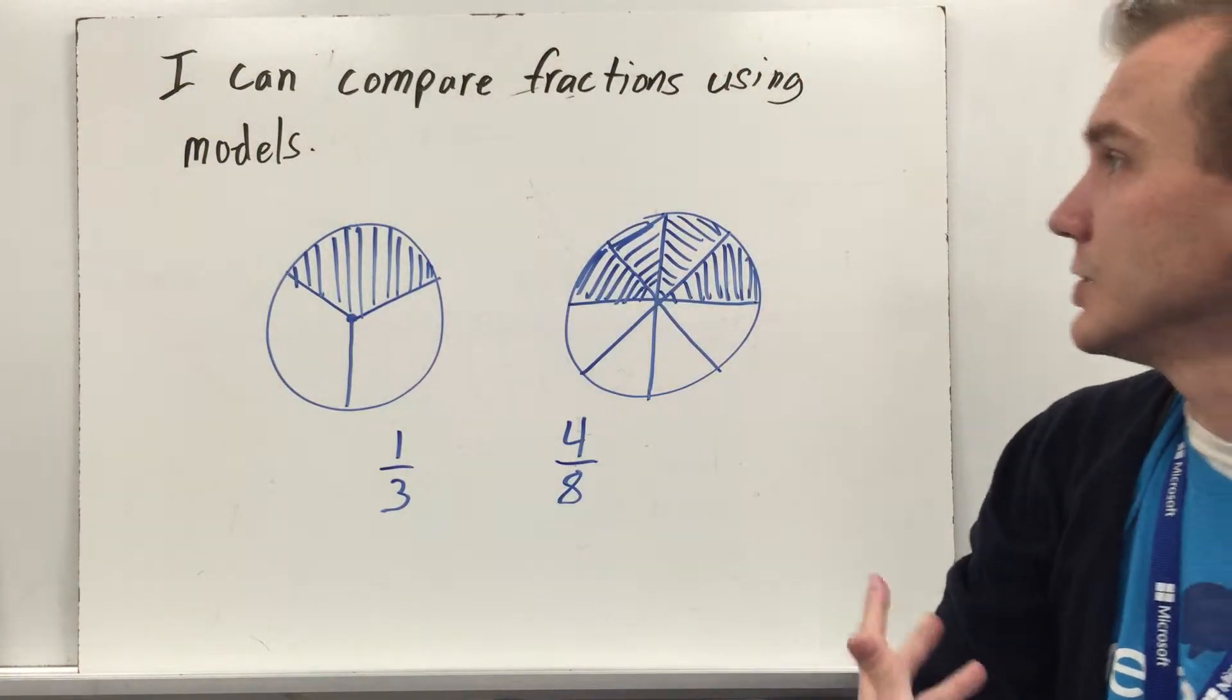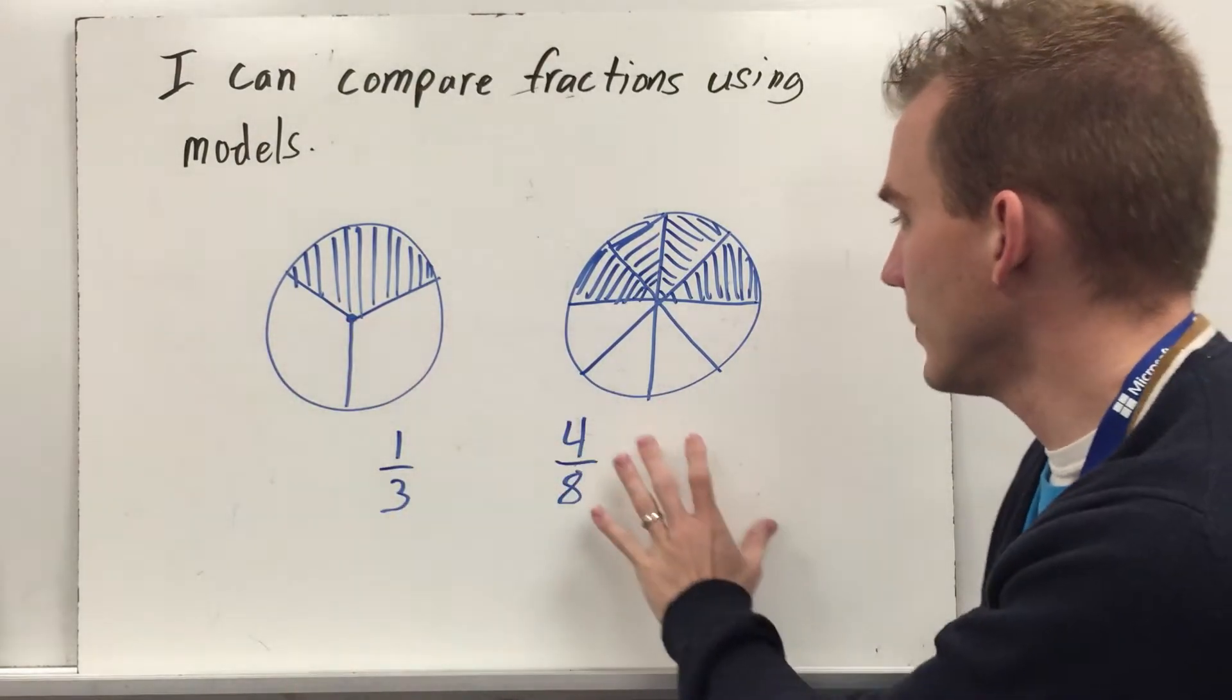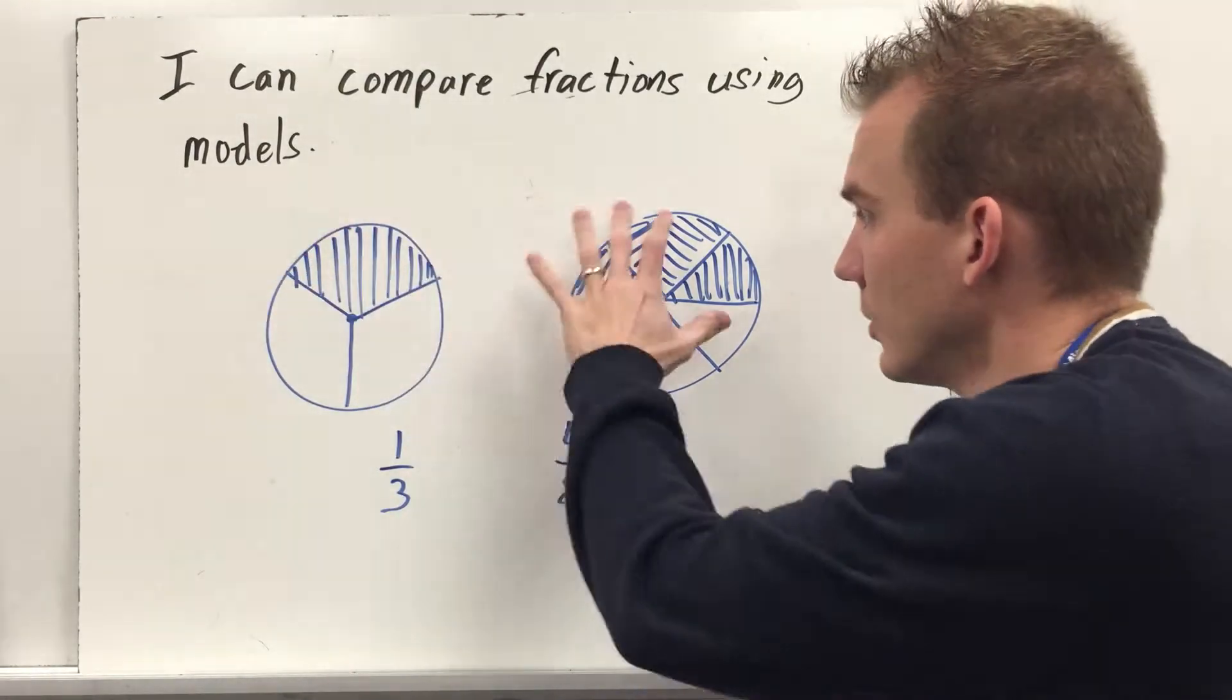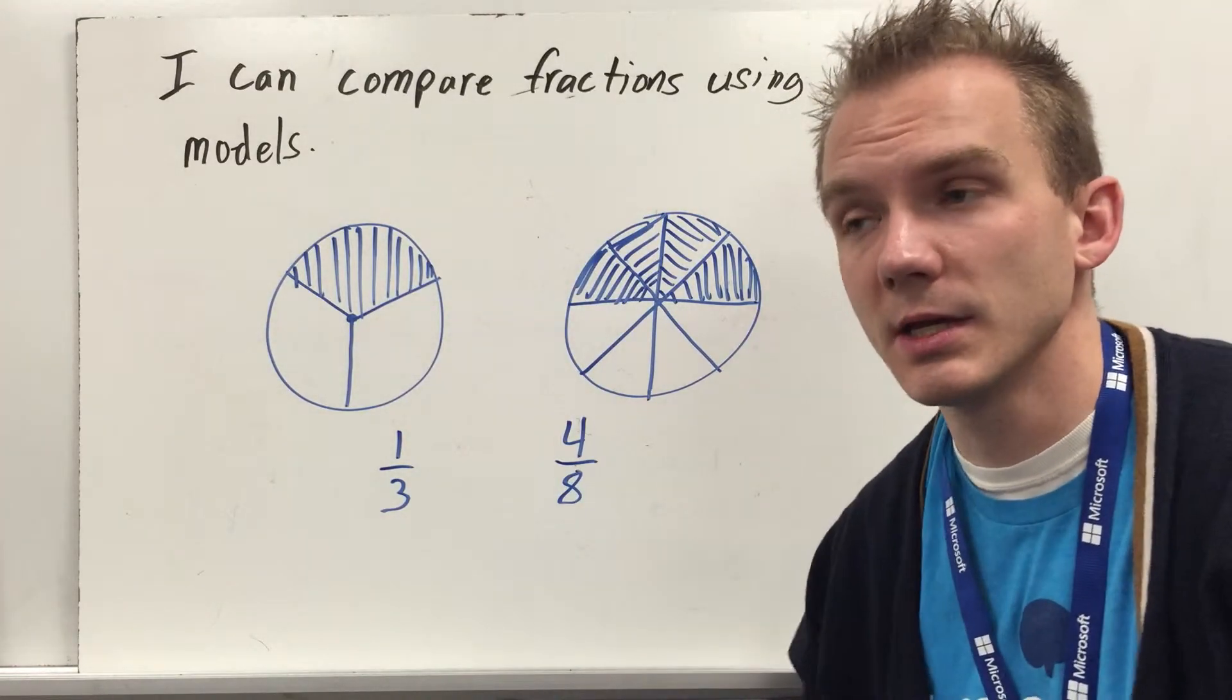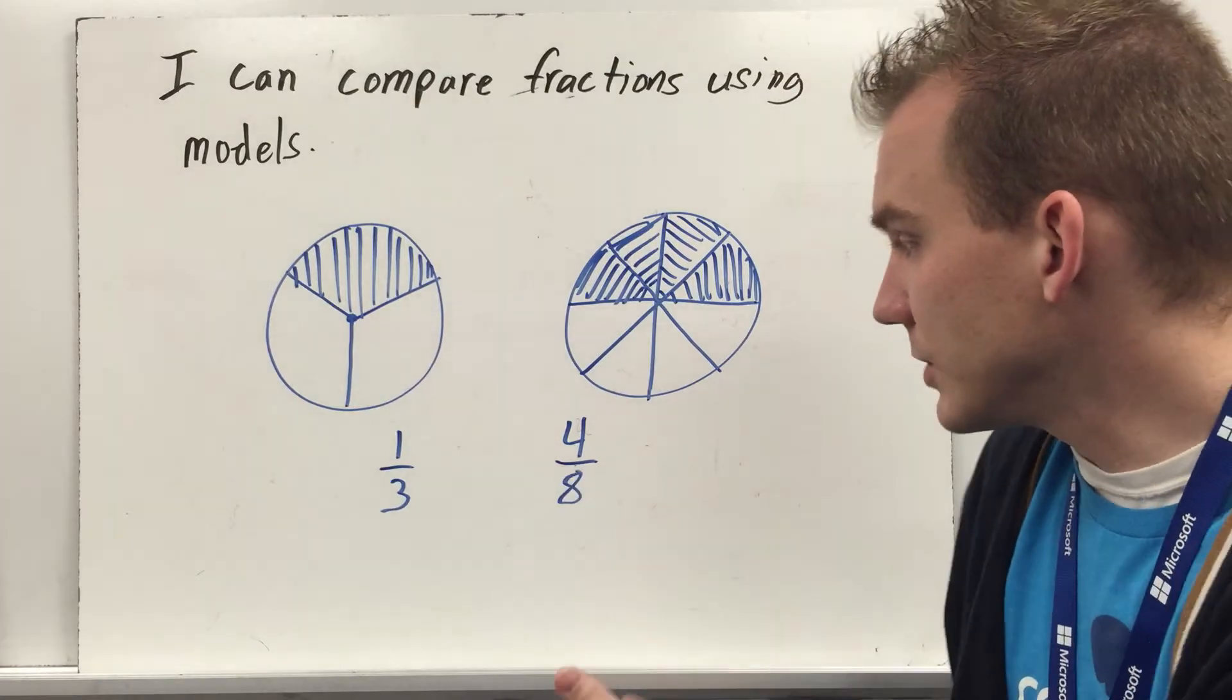I can compare fractions using models, so here's a model of one-third, and here's a model of four-eighths. Take a look which one has more shaded, assign that one two dots, assign the lower one one dot, connect your dots.